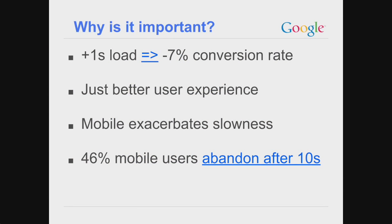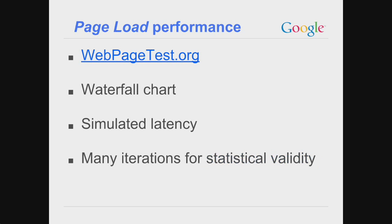Why test performance? Why not just go through our pages, optimize them, and be done with it? Web development is hard. Modern sites are complex, browsers are complex, and as people work on features it's very easy to inadvertently introduce a performance regression. Once a regression gets into production, it's fairly expensive to fix — many people are involved. It's much cheaper to catch it close to where it was introduced, ideally on pre-submit before it ever hits the source tree.